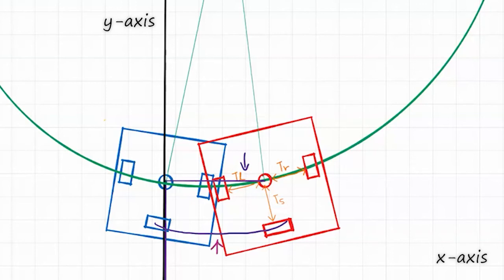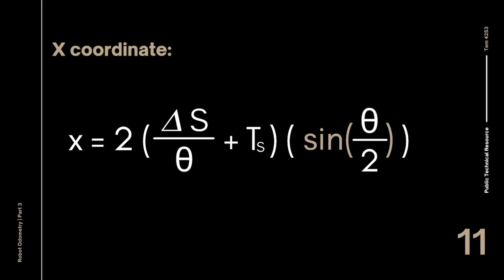Since the radius is now calculated with the arc formed by the back tracking wheel, this arc, to find the arc radius, we will use the change in the back tracking wheel, delta S, instead of delta R, and the distance between the back tracking wheel to the tracking center, tS, instead of tR. The rest of the calculations are exactly the same. Our x-coordinate in the position vector will be 2 delta S over theta plus tS times sine of theta over 2.